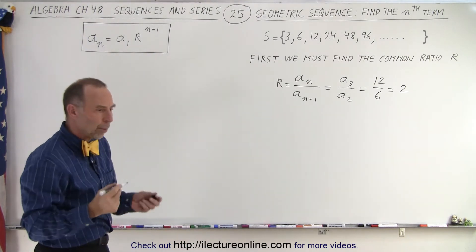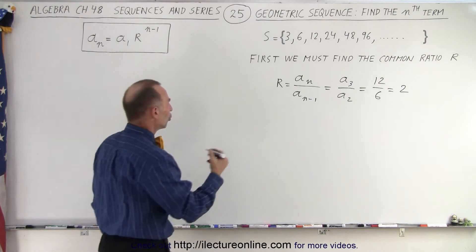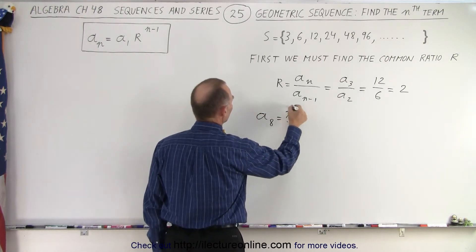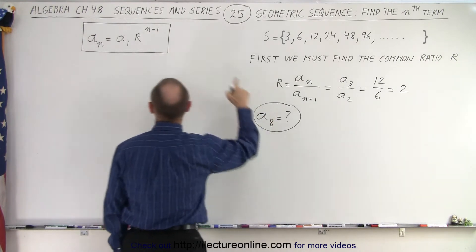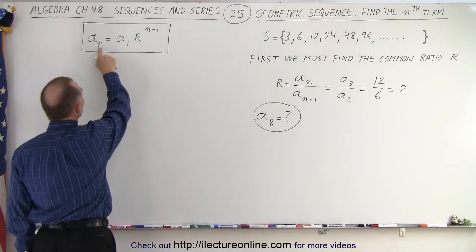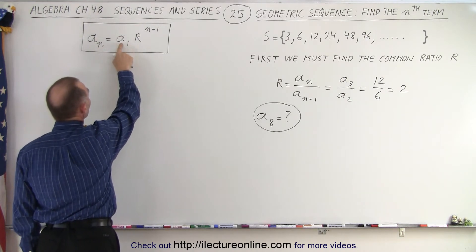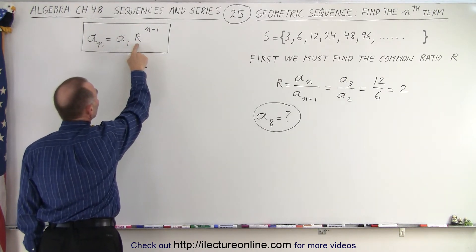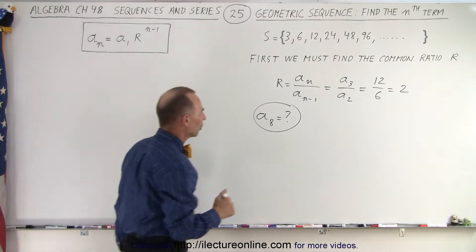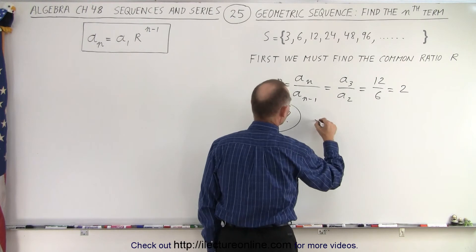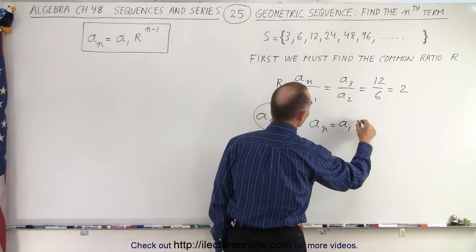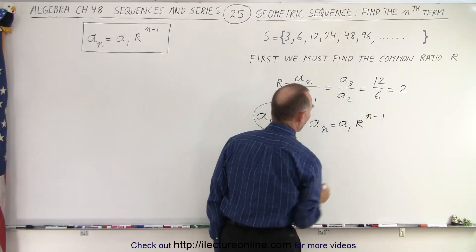Now let's say that we want to find the 8th term. We want to find a sub 8 is equal to question mark. Here's the equation that tells us how to do that. We can find the nth term by taking the first term and multiplying times the common ratio raised to the exponent n minus 1. So let's go ahead and do that. In this case we'll write the equation down: a sub n is equal to a sub 1 times R to the n minus 1 power.